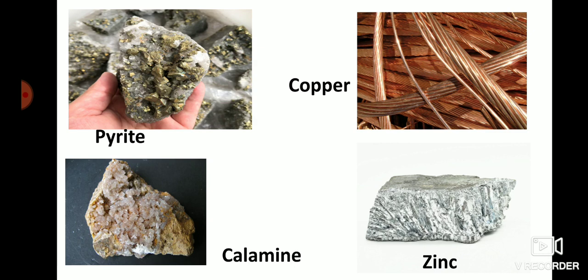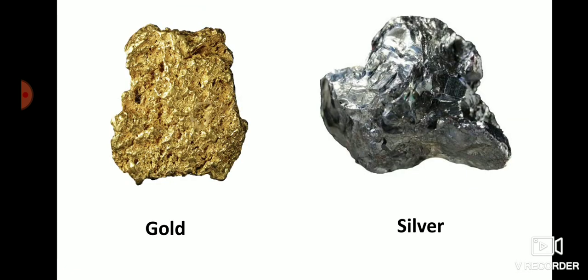Here is a picture of calamine, where it is found on the rock in crystal formation, from which we get zinc. Gold and silver don't have their own ore — they are native elements. They are found within rocks and are extracted by different processes.